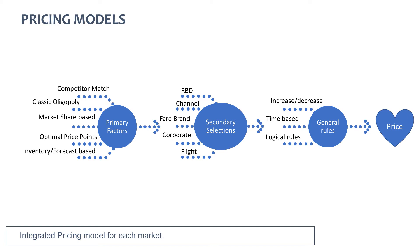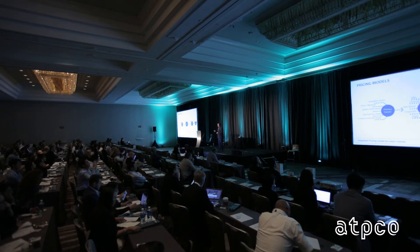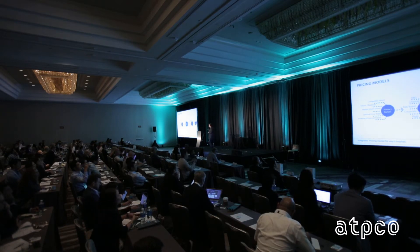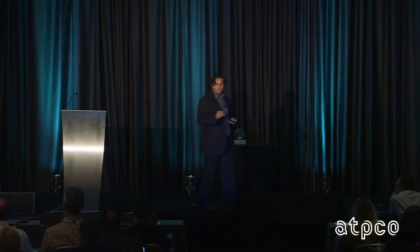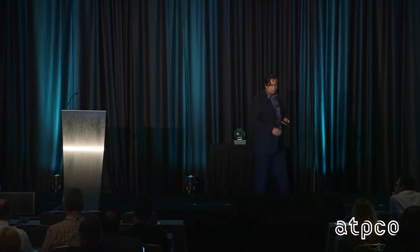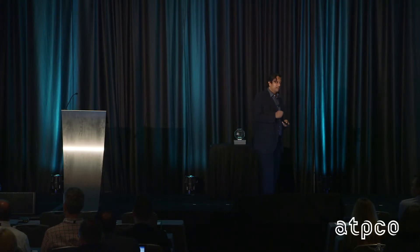We look at market share-based models and optimal price points or inventory-based models, and extrapolate those into secondary variables. The system recommends for every fare file — whether public, private, corporate, or travel agent — in real time. We look at the product rating, capacity and schedule, airline rating, market rating, fares rating, and distributors rating of every competitor, every night for every market.